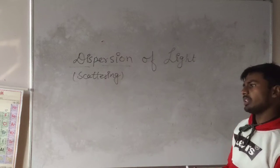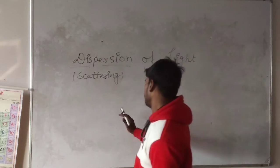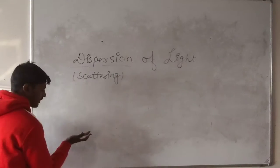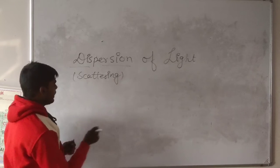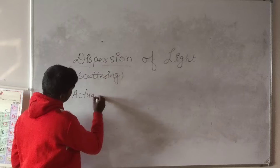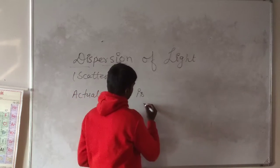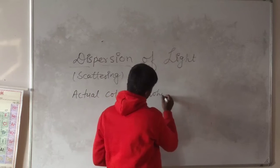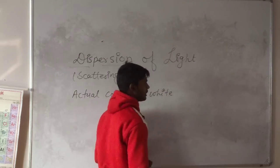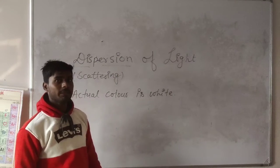So actually what is the color? Red or orange? We cannot say actually. The actual color is white, and this is made up of seven colors.